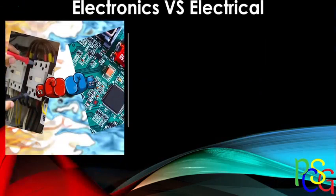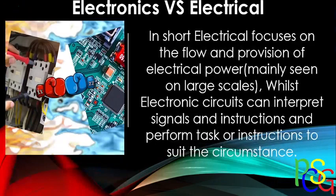Now we have a compressed view of what electronics versus electrical engineering is. Ask yourself: what do you think is the main difference between them? What really makes them stand out from each other? Take a couple of seconds to think about that — you can pause the video. In short, electrical focuses on the flow and provision of electrical power, mainly seen on larger scales, whilst electronic circuits can interpret signals and instructions and perform tasks to suit the circumstance.